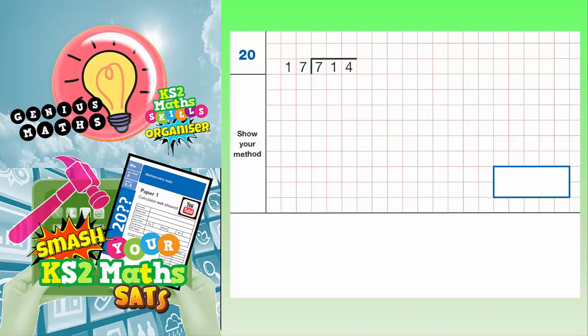Question 20. 17s into 714s. So this is a divide question. It's another way of saying 714 divided by 17.